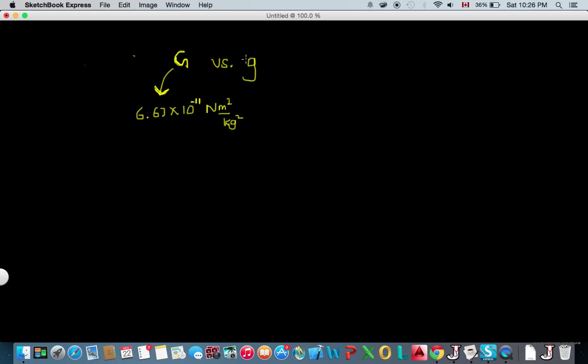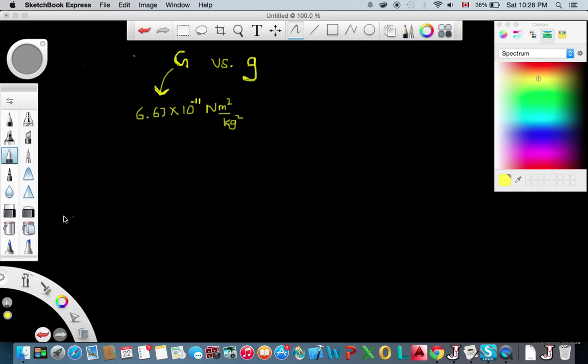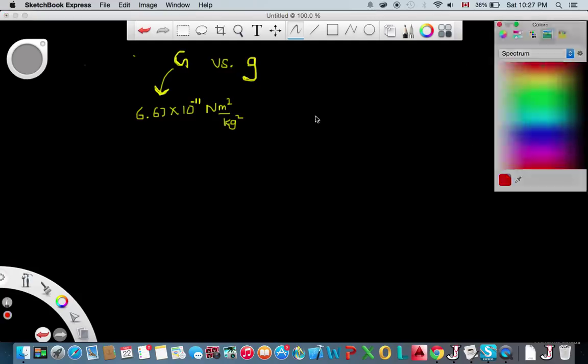This lowercase g is the acceleration due to gravity. What this is saying is that whenever you have a ball at the top of a cliff that is h meters high and you drop it, this ball would accelerate downwards at the rate of g.